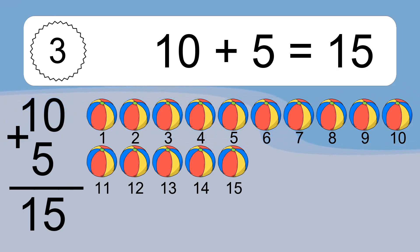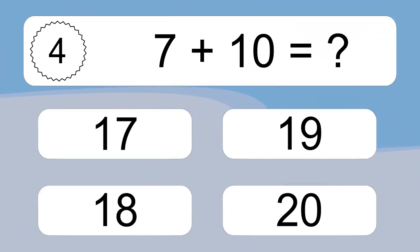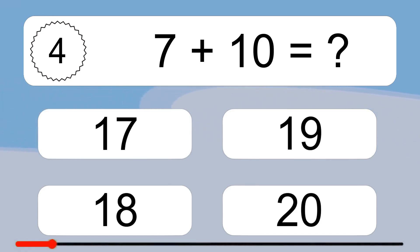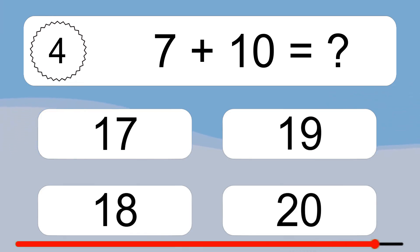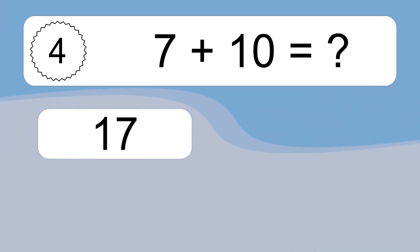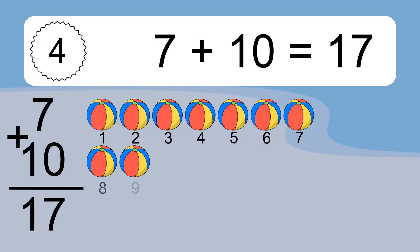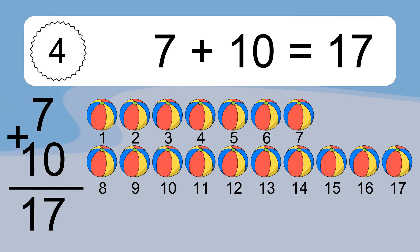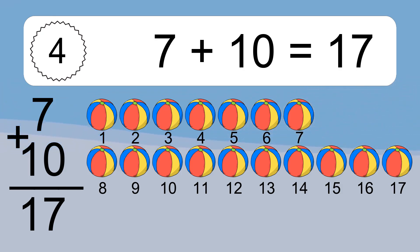7 plus 10 equals what? Let's count it: 1, 2, 3, 4, 5, 6, 7, 8, 9, 10, 11, 12, 13, 14, 15, 16, 17.